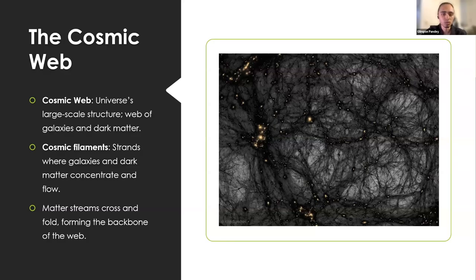The basic concept is the cosmic web, the universe's large-scale structure. It's in parsecs, megaparsecs. It's a web of galaxies and dark matter, and those galaxies and dark matter concentrate in strands called cosmic filaments. These are effectively like highways for matter in the universe where matter concentrates and flows. When matter streams cross each other, they fold and form the backbone of the cosmic web and hence the structure of our universe.